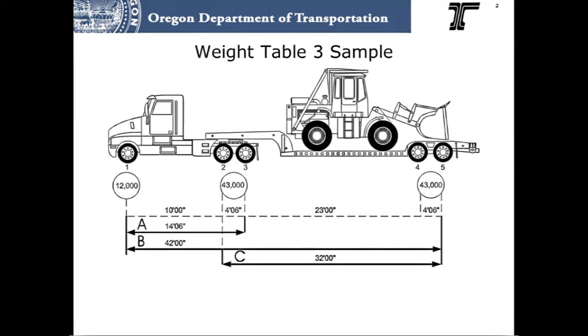Because this combination is hauling a single, non-divisible load, up to 43,000 pounds is allowed on the tandem axles. In this case, all group axle spacings and weights conform to Weight Table 3.